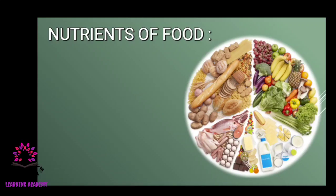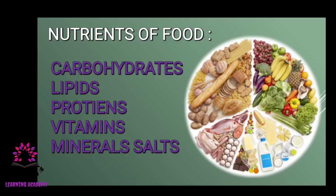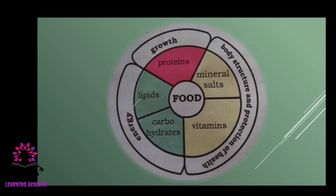The food we eat contains nutrients that give energy, help in our growth, and protect our health. They are called nutrients. There are five nutrients in food: carbohydrates, lipids, proteins, vitamins, and mineral salts.